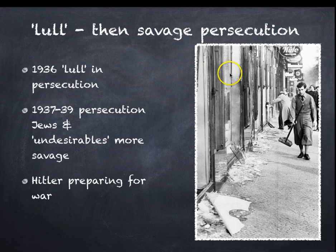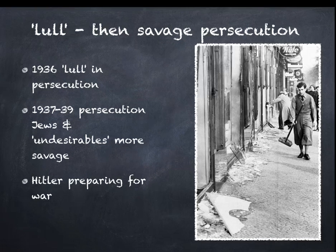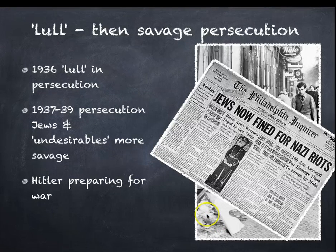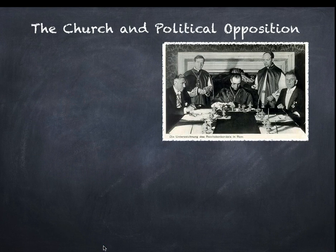You can see a picture here of Kristallnacht, in which Nazi stormtroopers, with the encouragement of Goebbels, smashed up Jewish shops and businesses and burned down synagogues. And the irony on top of it — the sting in the tail — is that not only were Jewish people's businesses smashed up, they were actually forced to pay for all of the damage. It's during this time, of course, between the late 1930s, that Hitler is preparing for war. What about the church and political opposition?